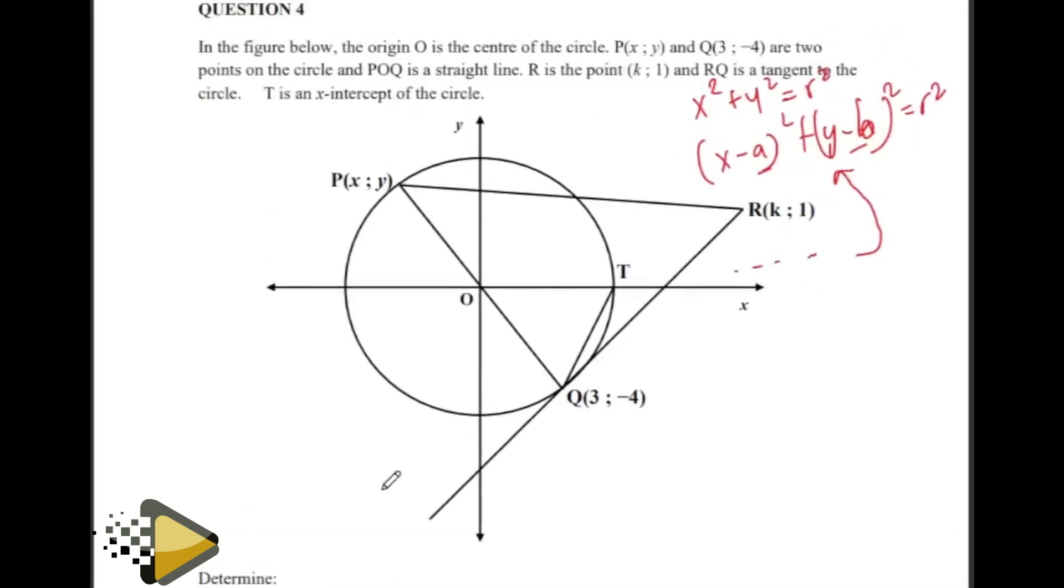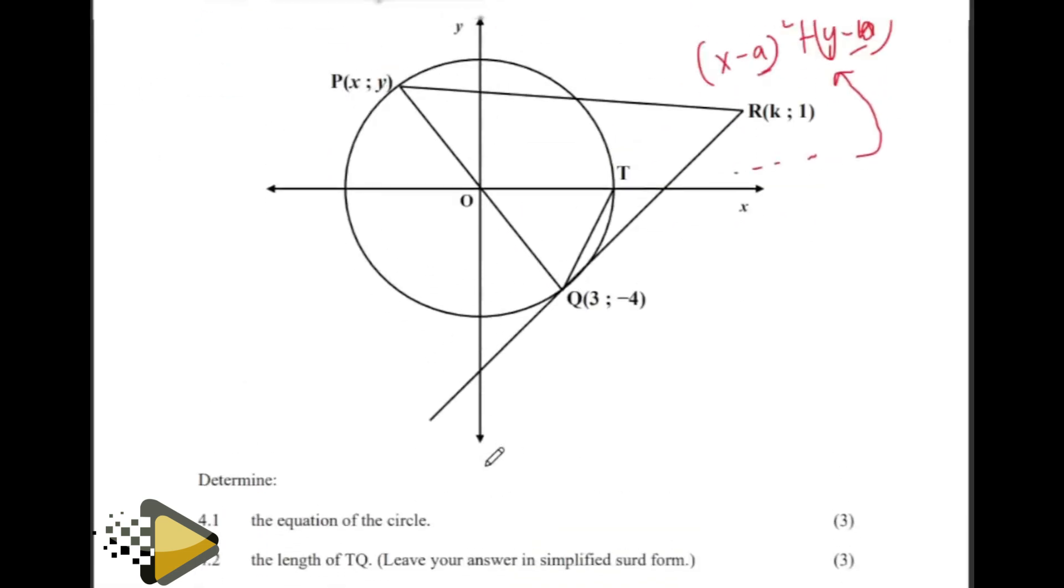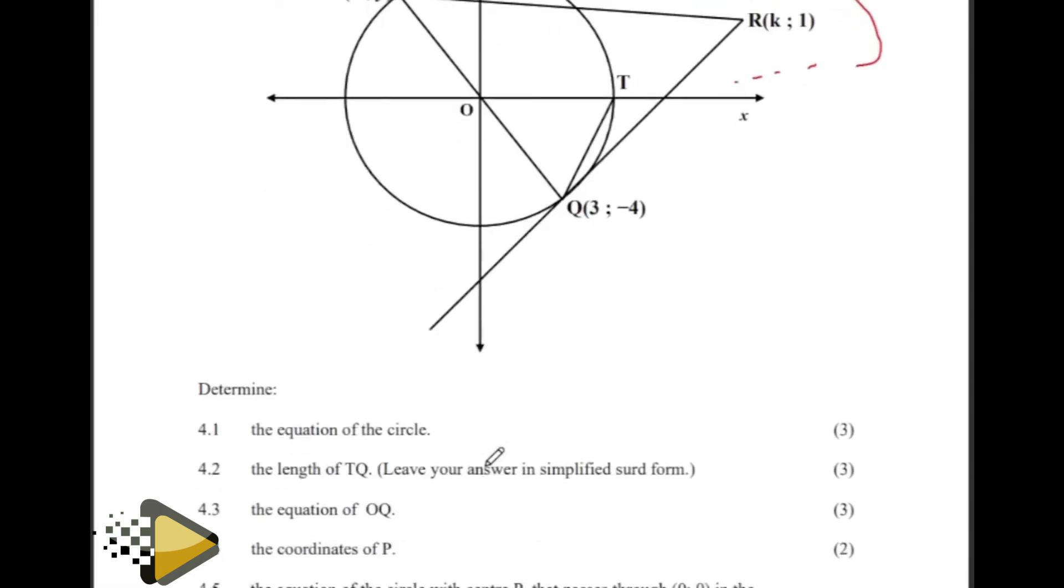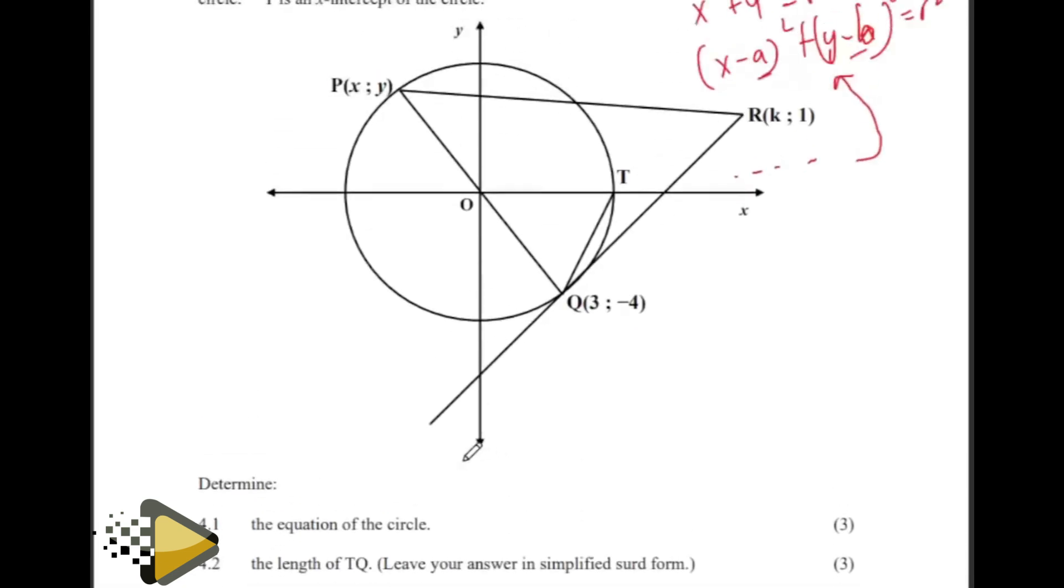Here's an example where the circle has drawn for us, and it's passing through the origin. We have points that are missing, and they're telling us that there's a tangent. When there's a tangent, chances are high we're going to apply the Euclidean concepts. They want the equation of the circle. Since the circle is passing through the origin, all we need is just the radius. We have the origin, which is 0 for x and 0 for y. Use OQ and then get the distance formula, that will be our radius, and then substitute it there.